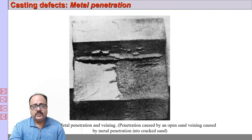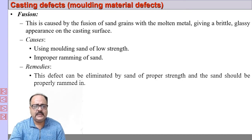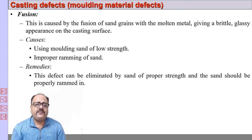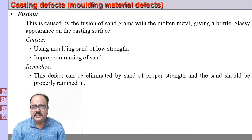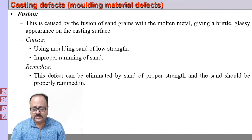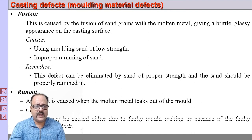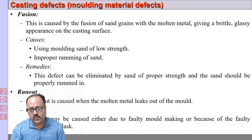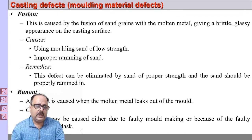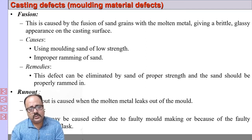As you can see, this is metal penetration — a very rough surface. Then we have fusion: when the sand is not proper and the refractoriness of the sand is not good, fusion of the sand takes place, giving a very glassy appearance to the casting surface — this defect is called fusion. Then we have run out: leaking of molten metal from the mold is called run out. If there is not sufficient weight on top of the cope, liquid metal can escape from the parting surface.